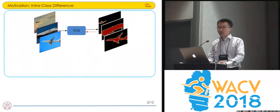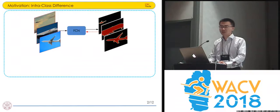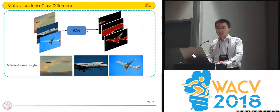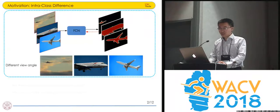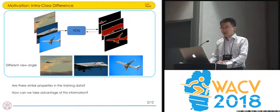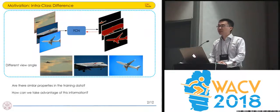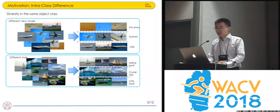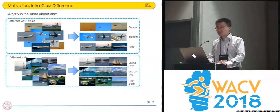Usually we use cross labels to train the FCN to get the segmentation result, but we can see there is some intraclass difference within a certain class. For example, there are some different view angles for the airplane class. The features are very different.